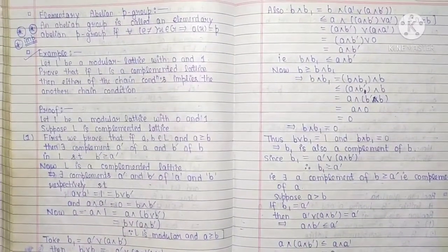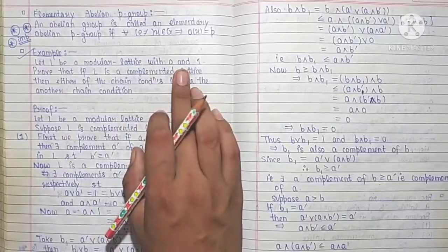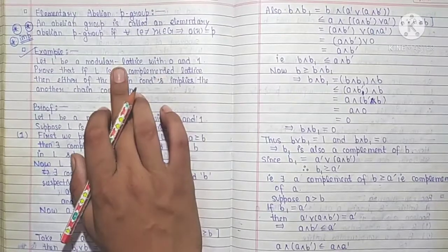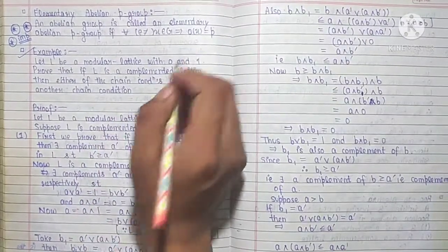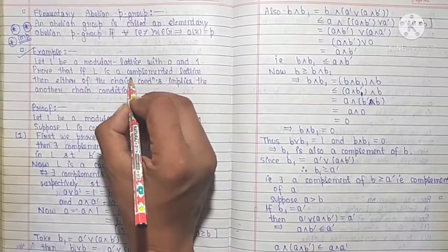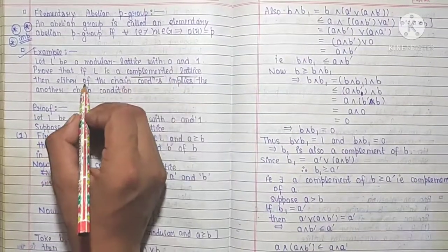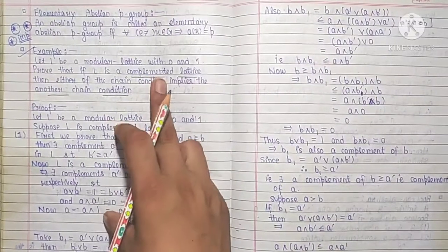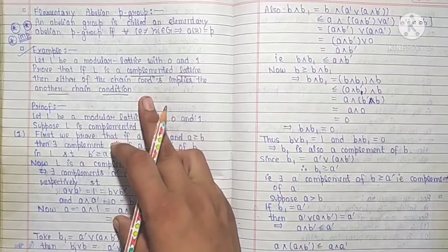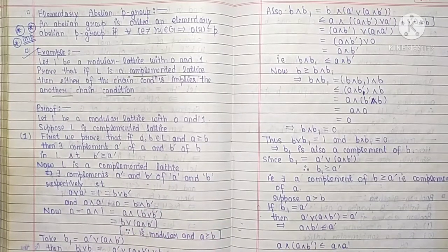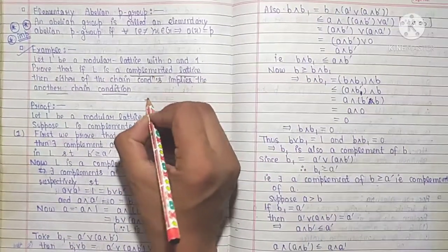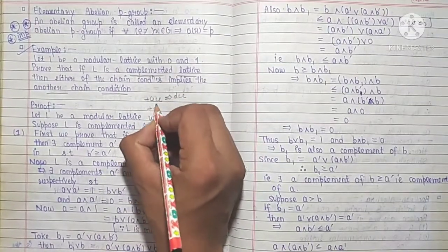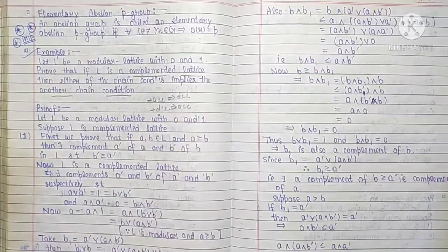Good morning everyone. Our next theorem is: let L be a modular lattice with 0 and 1. We are to prove that if L is a complemented modular lattice with null element and unit element, then either of the chain conditions implies the other. That is, complemented plus ACC implies DCC, and complemented plus DCC implies ACC. We have to prove this.